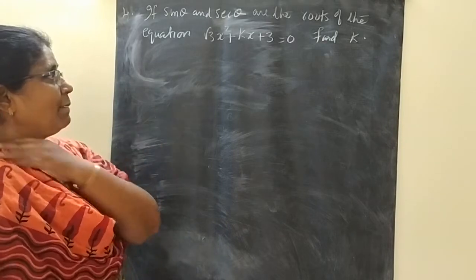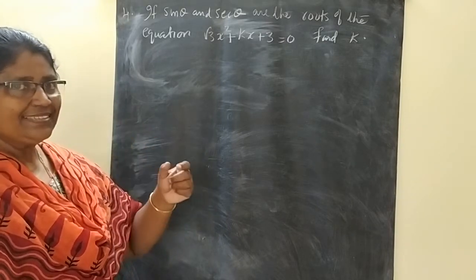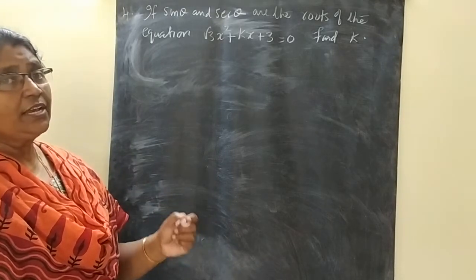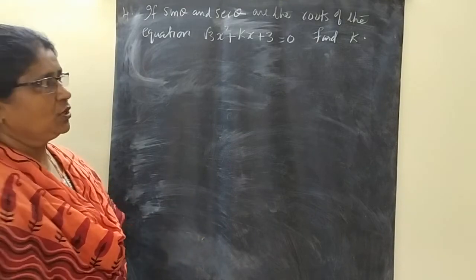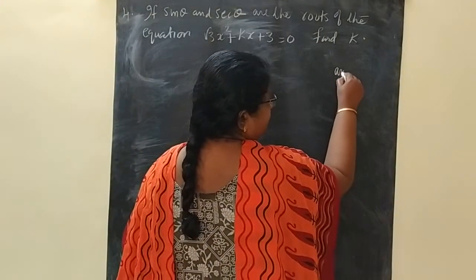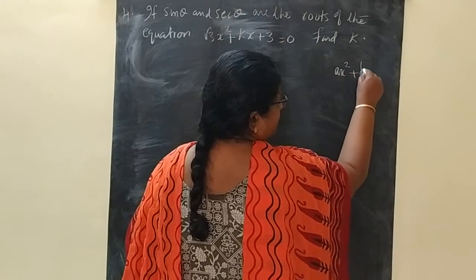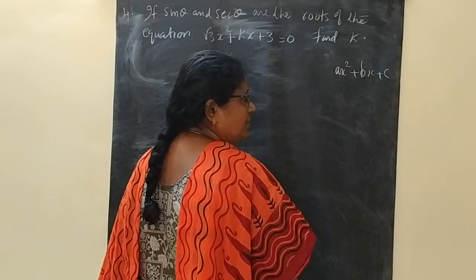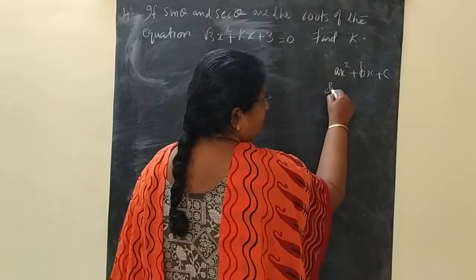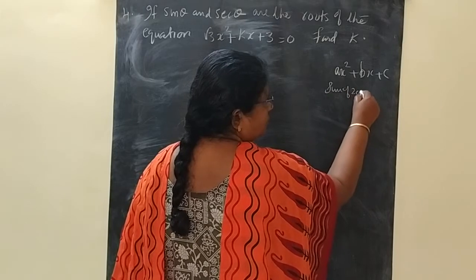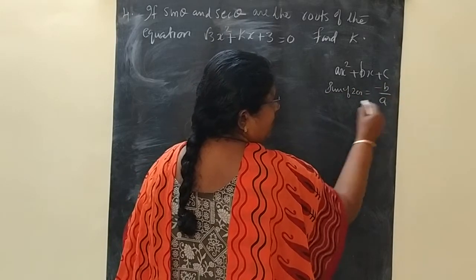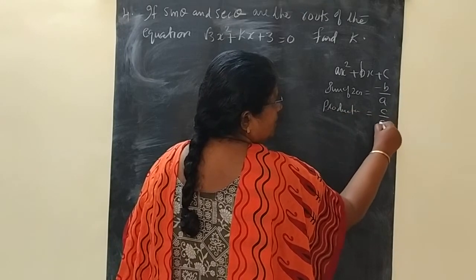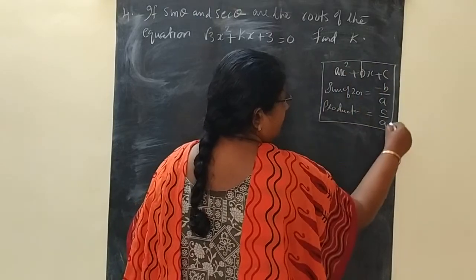Here we are applying the second chapter, the polynomial chapter — an important result. We studied that for ax² + bx + c, the general form of a quadratic polynomial, the sum of zeros is equal to -b/a and the product of zeros is equal to c/a.